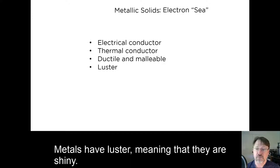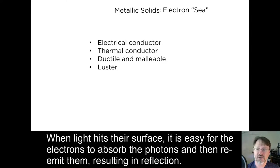Metals have luster, meaning that they're shiny. When light hits their surface, it is easy for the electrons to absorb photons and then re-emit them, resulting in reflection.